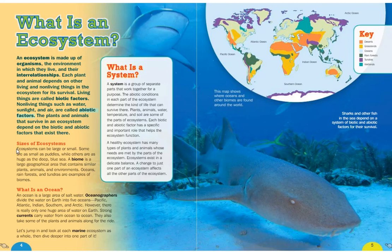Sizes of ecosystems: ecosystems can be large or small. Some are as small as puddles while others are as huge as the deep blue sea. A biome is a large geographical area that contains similar plants, animals, and environments. Oceans, rainforests, and tundras are examples of biomes. So what is an ocean? An ocean is a large area of salt water.